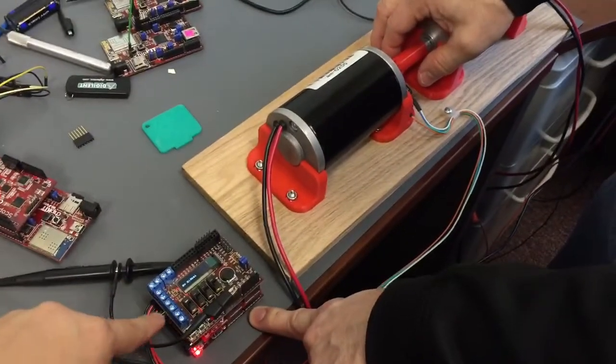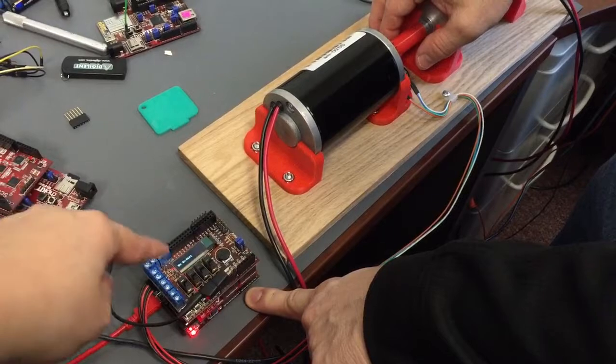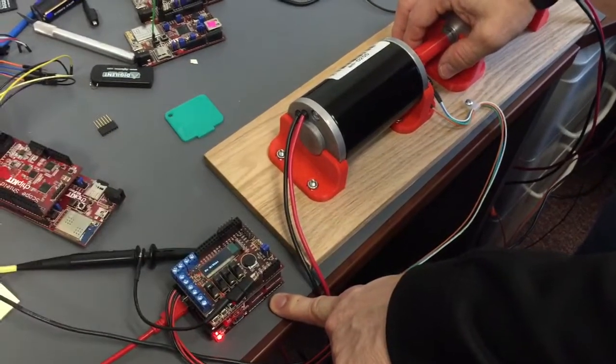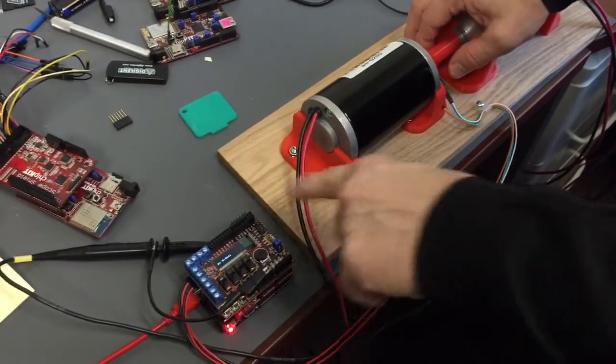Could you potentially replace this basic IO shield with like a breadboard and the P mod OLED? Yep.